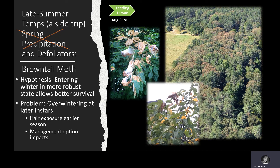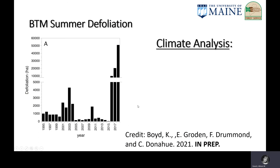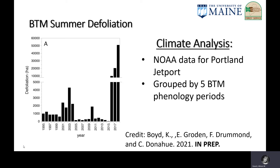Some formal work has been done on climate impacts to brown-tailed moth out of the University of Maine by master's student Carla Boyd, her advisor Ellie Groden, along with Frank Drummond and Charlene Donahue. They conducted an analysis of defoliation along with weather variables on five phenologically important periods for brown-tailed moth.